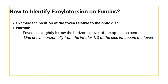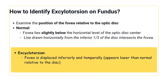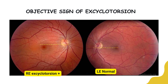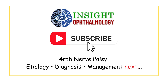To objectively identify excyclotorsion on fundus examination, the double Maddox rod test can quantify torsion, but a simple fundus examination also works. You examine the position of the fovea relative to the optic disc. Normally, a horizontal line drawn from the inferior one-third of the disc intersects the fovea. In excyclotorsion, the fovea is displaced inferiorly and temporally, appearing lower than normal relative to that horizontal line. In the diagram shown, the right fundus demonstrates excyclotorsion — a line drawn from the inferior one-third of the normal left disc intersects the fovea, whereas the same line in the right eye crosses superior to the fovea, as the extorted eye displaces the fovea inferiorly.